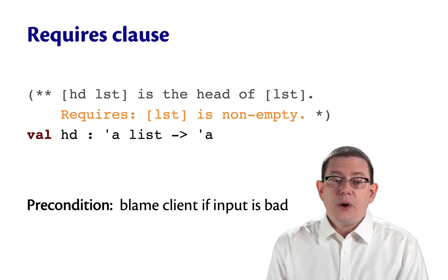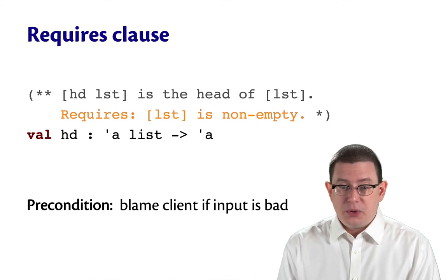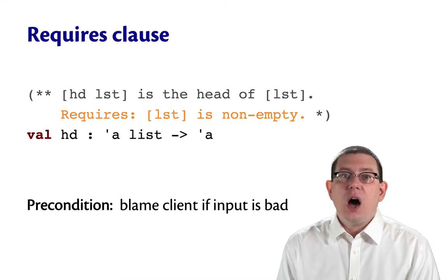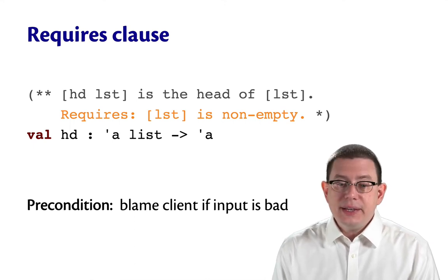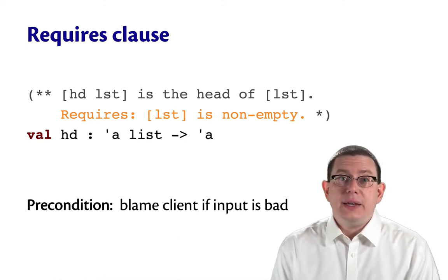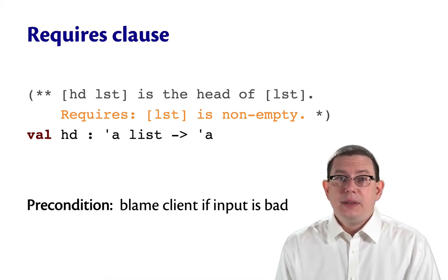This would be a precondition that clarifies who to blame if the list happens to be empty. That would be the client's fault because the specification said you're not allowed to pass in a list that is empty. If the client did pass in a list that's empty, then the implementer would be free to do whatever they wanted.